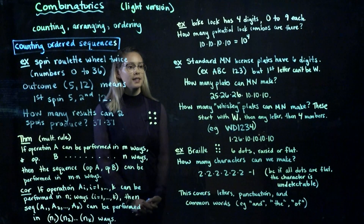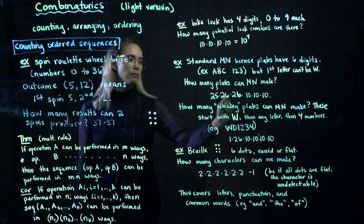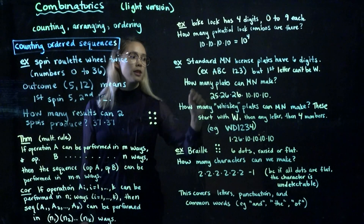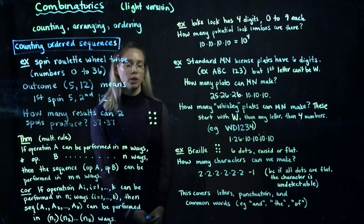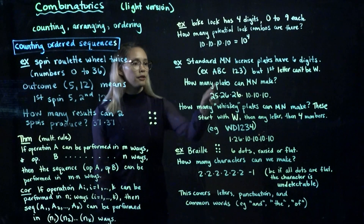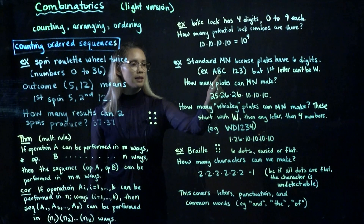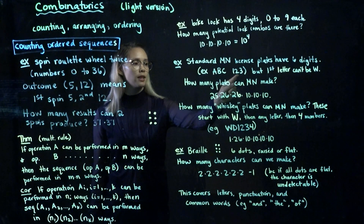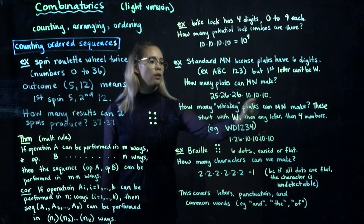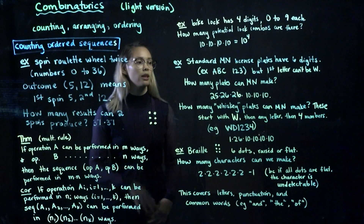Next example: Minnesota license plates. A standard Minnesota license plate has six characters, with the format being three letters followed by three numbers, and a rule that the first letter cannot be a W. There are 26 letters in the alphabet, so the first position has 25 options. The second and third letters each have 26 options, and each of the three numbers has 10 options. This product gives us how many standard Minnesota license plates can be made.